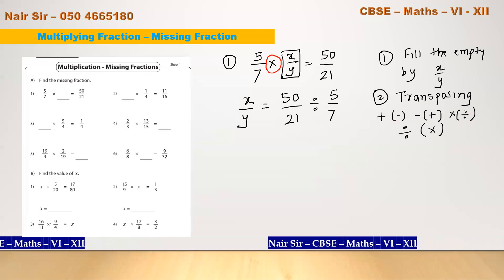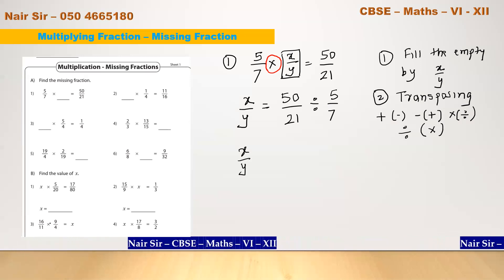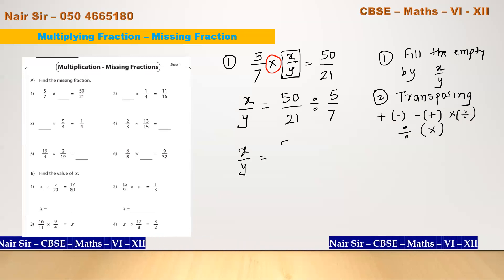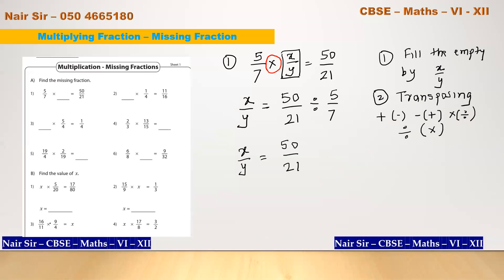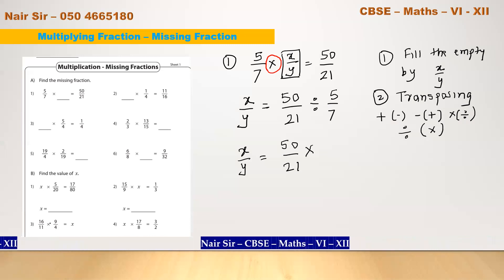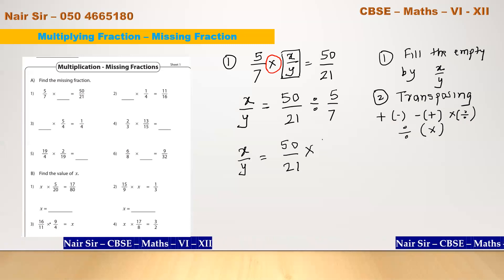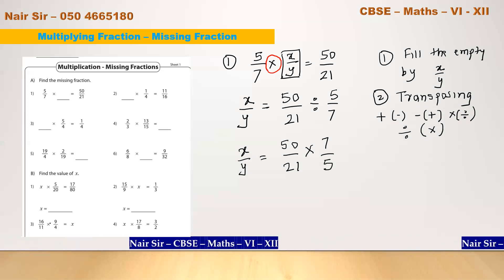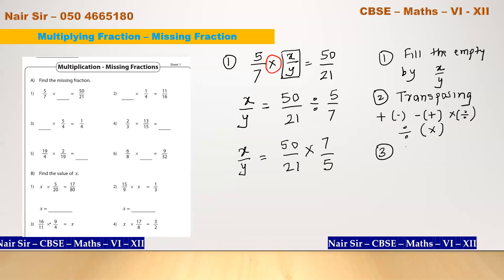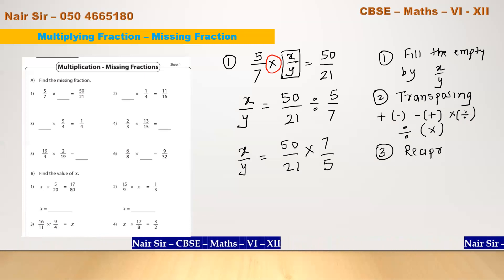x upon y is equal to fifty upon twenty-one. How will I change this multiply? By changing the sign, by writing the reciprocal. So the third step is you need to know what is reciprocal.